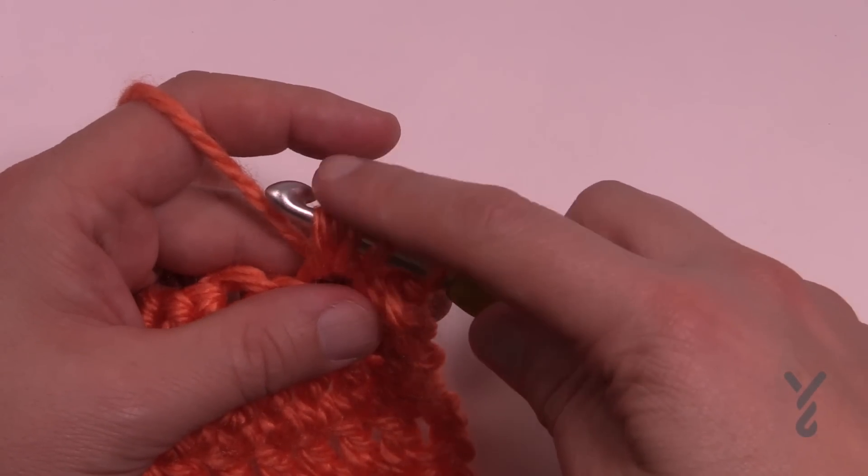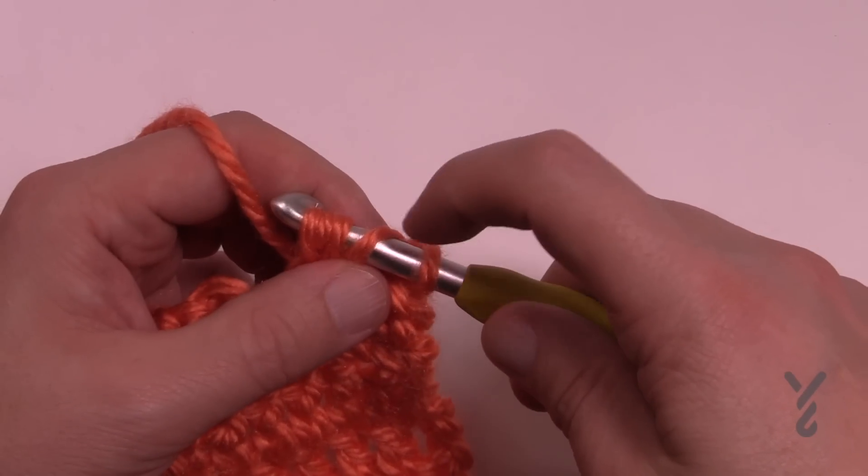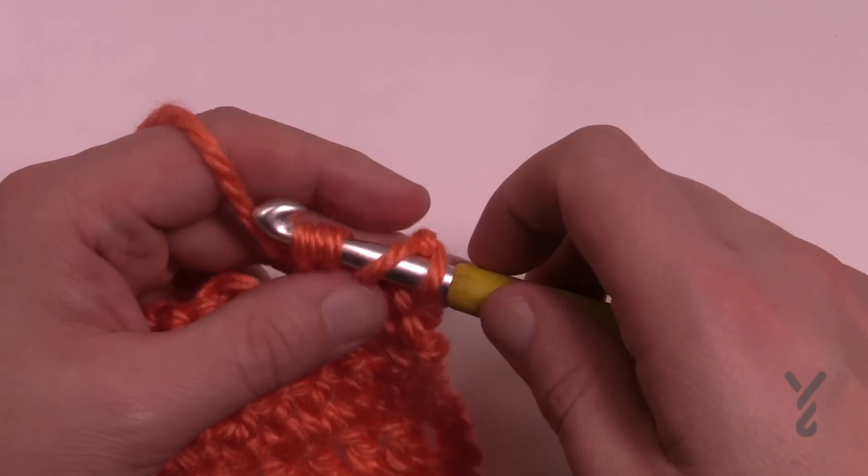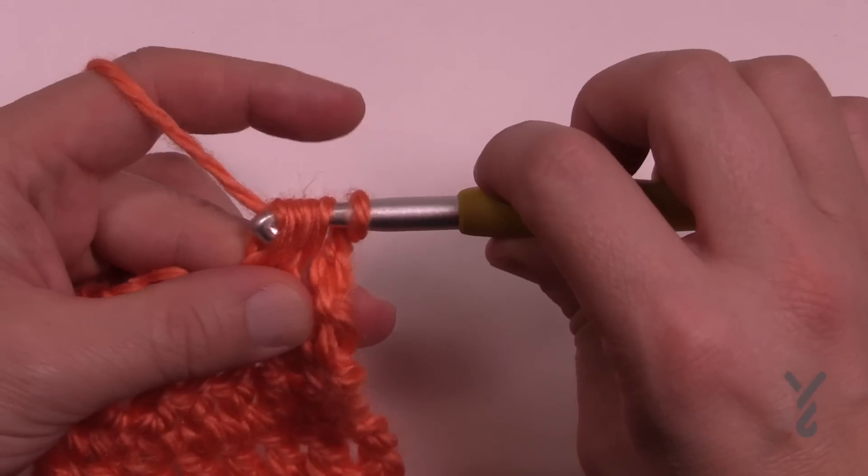Now if this is a puff stitch, you would wrap the hook and pull through just this section and then wrap again and pull through the final. But if it's a cluster, you're going to pull through everything.